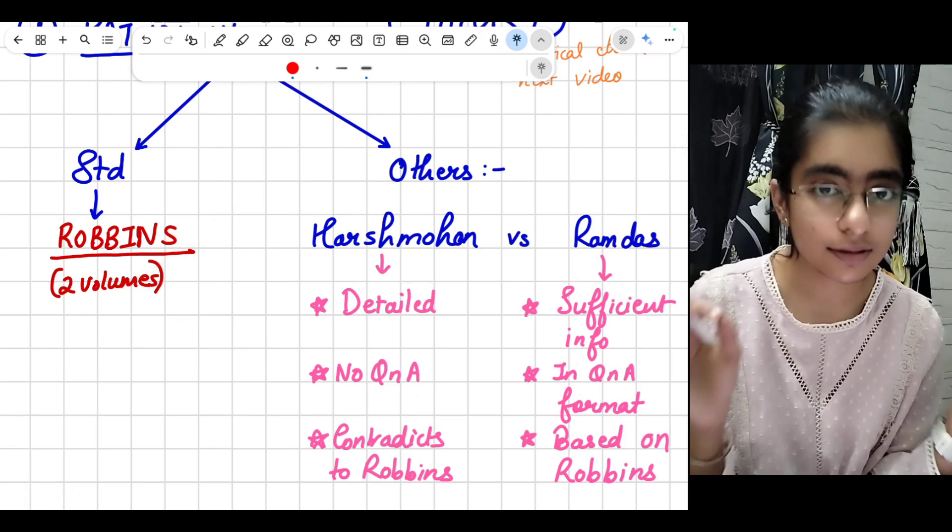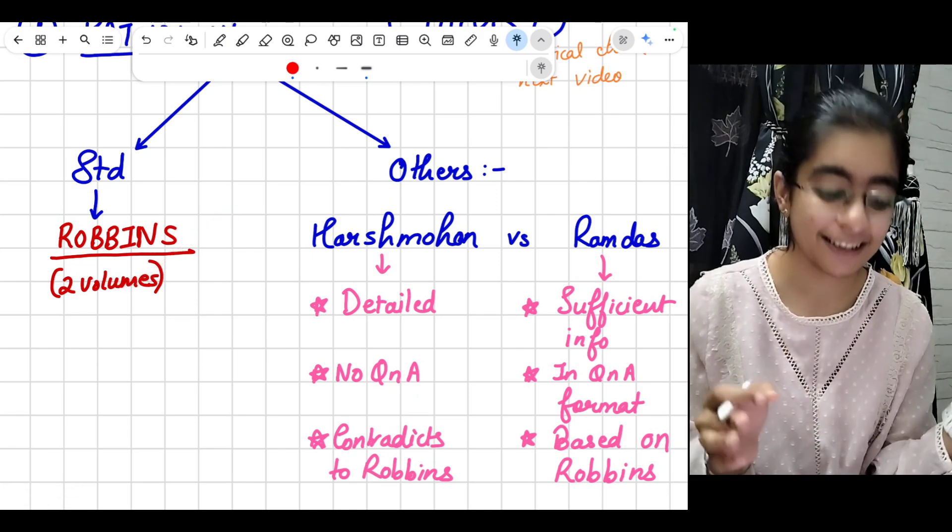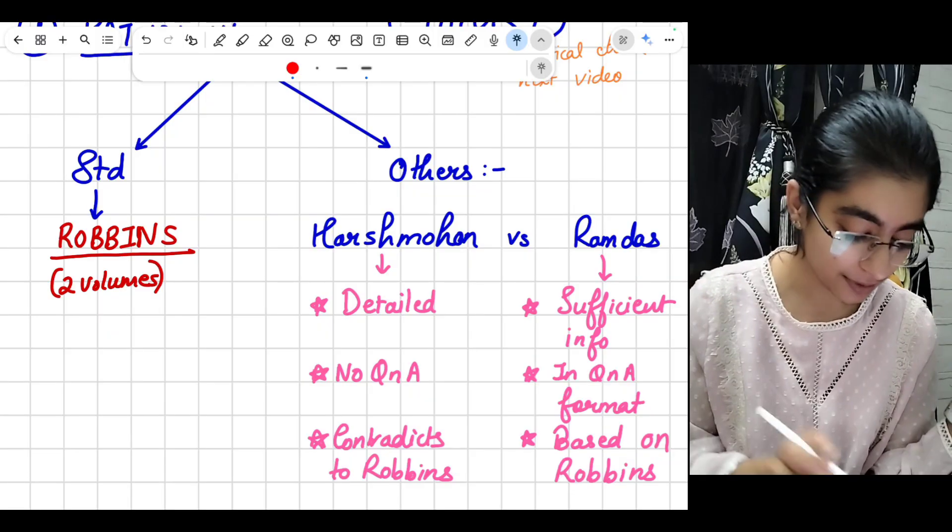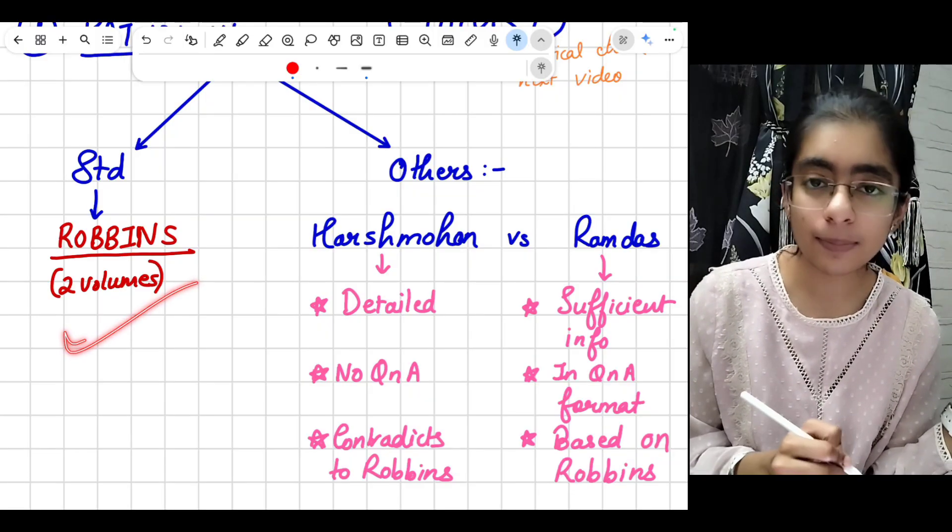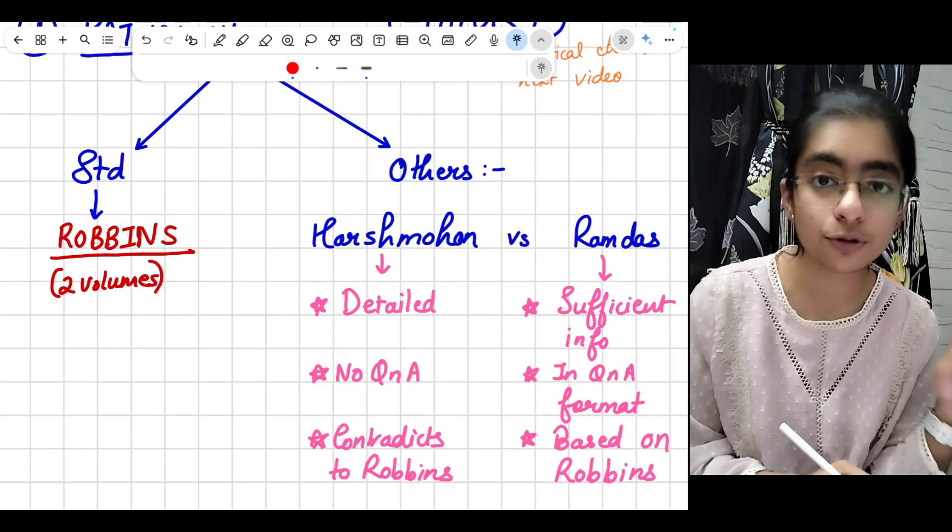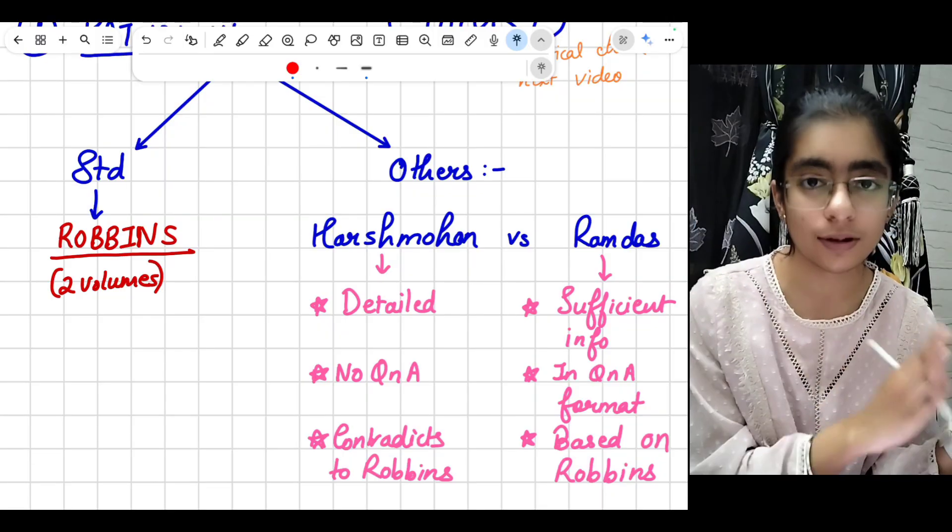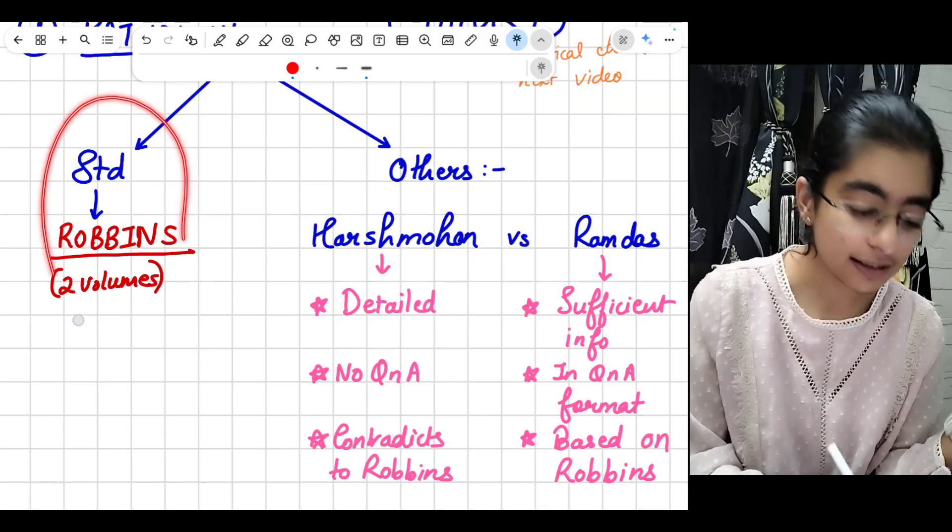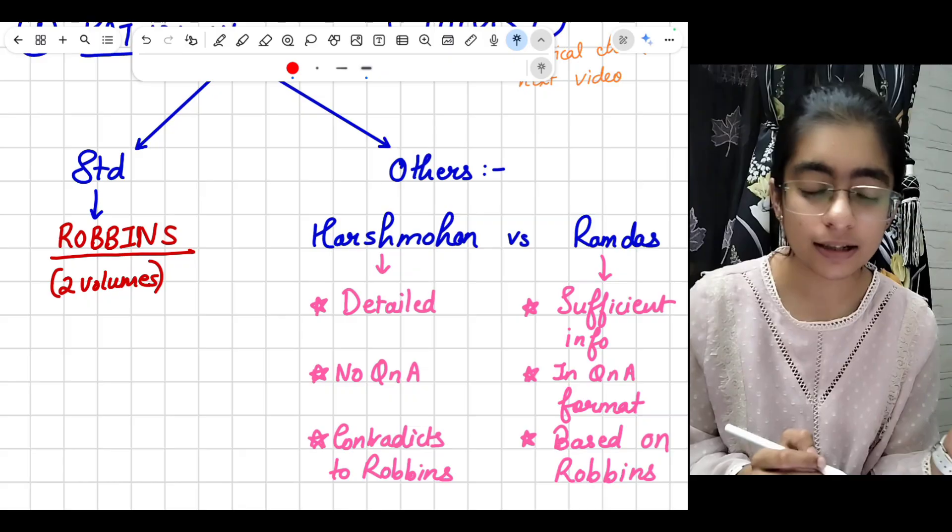You must have heard the name before, because everyone talks about Robbins. Here we buy the South Asian edition only, which has two volumes: the red color Robbins volume 1 and volume 2. This doesn't depend on your tablets and all or iPads.